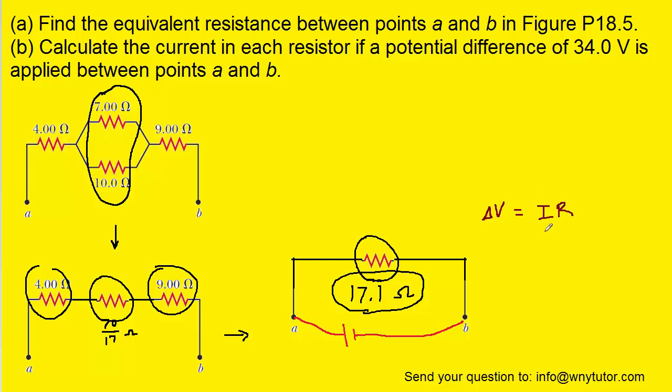Now Ohm's Law is traditionally written in this form, but if we divide both sides of this equation by resistance, we can see that delta V over R is going to equal the current. So what we'll do is we'll plug in the potential difference of 34 volts in for delta V, and then we'll plug in our equivalent resistance for the R, and that will allow us to calculate the overall current. And when we compute that, we get a value of about 1.99 for the total current that is passing around the circuit. Now that has a unit of amps.